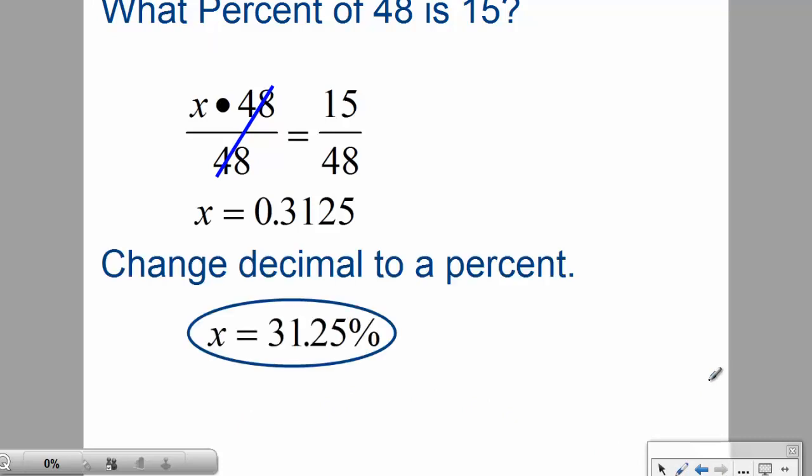Of course changing the decimal to a percent is real easy. Badoop badoop. Bounce the decimal two spaces to the right. Throw down your percent sign. Now you've answered your question properly. Thirty-one and twenty-five hundredths percent. Easy math.